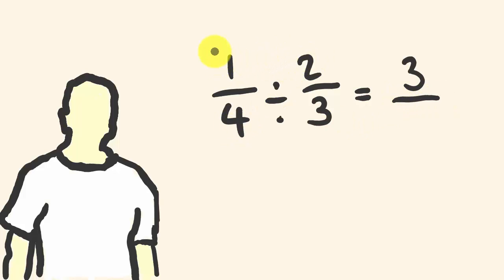The numbers that we have now, so we've done the 1 times 3, we have 2 times 4 which is 8. Our answer: 3 eighths. Did you get 3 eighths?